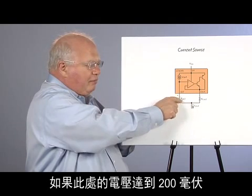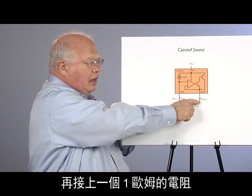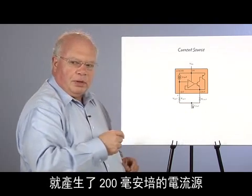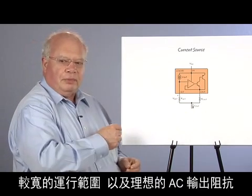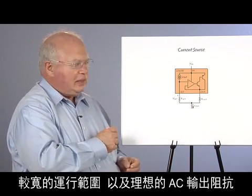Then we put our current set resistor from the output back to the common point. So, if we were to have 200 millivolts across here, and we put 1 ohm here, we'd have a 200 milliamp current source with good compliance and wide operating range and good AC output impedance.